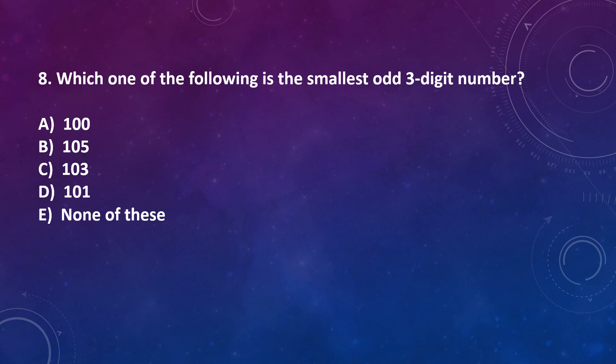Question number 8: Which one of the following is the smallest odd 3 digit number? Option A: 100, Option B: 105, Option C: 111, Option D: 101, Option E: none of these. The smallest 3 digit number is 100, but it is given that we have to find odd smallest odd 3 digit number is 101. Correct answer is option D.